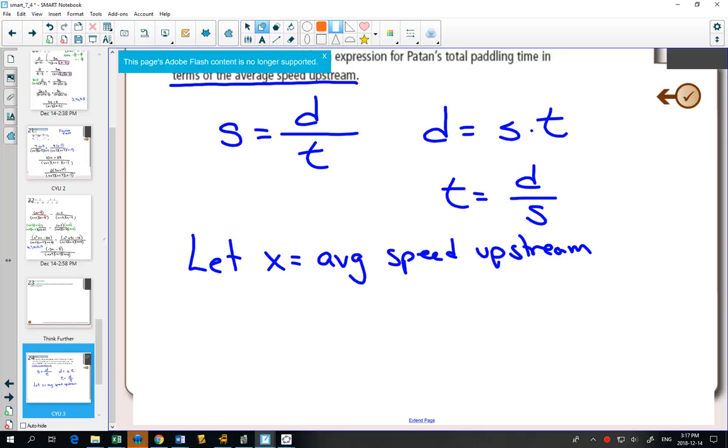If you can say a speed, if you can say 10 kilometers per hour, you can write speed is distance over time, and you're fine. If you can only say speeds in terms of degrees, you might be in trouble. So let x equal the average speed upstream. We have two times.